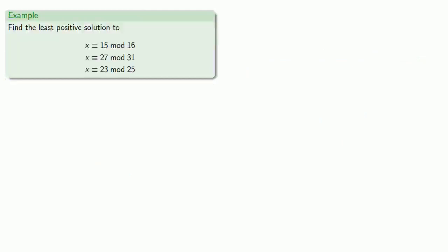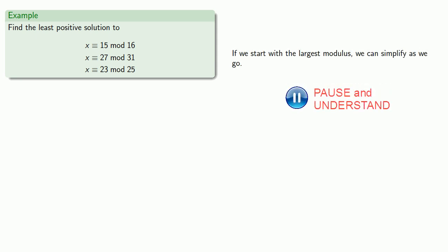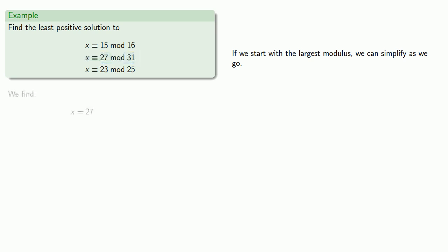So let's try a more complicated problem. We want to find the least positive solution to x congruent to fifteen mod sixteen, twenty-seven mod thirty-one, and twenty-three mod twenty-five. Now since we can reduce the numbers mod n, if we start with the largest modulus, we can simplify as we go. So we want to find a solution to x congruent to twenty-seven mod thirty-one, and so we find a solution is twenty-seven. And if we add a multiple of thirty-one, it'll still be congruent to twenty-seven mod thirty-one.